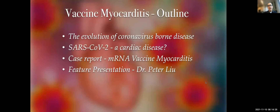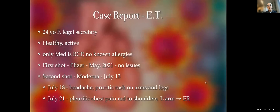I'd like to present a case — the only patient I've seen with what I believe to be mRNA vaccine myocarditis. She is a 24-year-old legal secretary, healthy and active, on only the birth control pill, with no known allergies. She had her first shot of Pfizer in May with no issues. Due to supply issues, her second shot was Moderna, received on July 13.